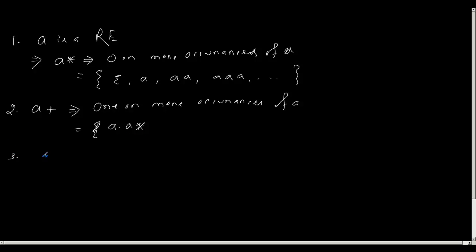Thirdly, there is something called a question mark. What does this mean? This means either zero or one occurrence of a. So this can be either a or empty.